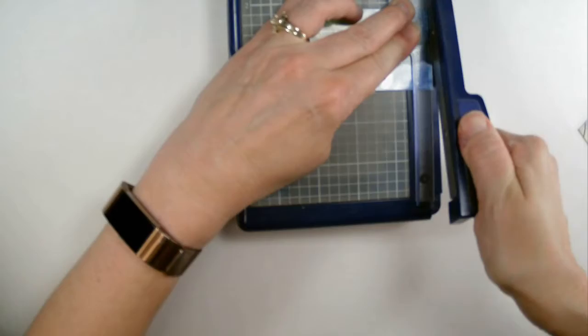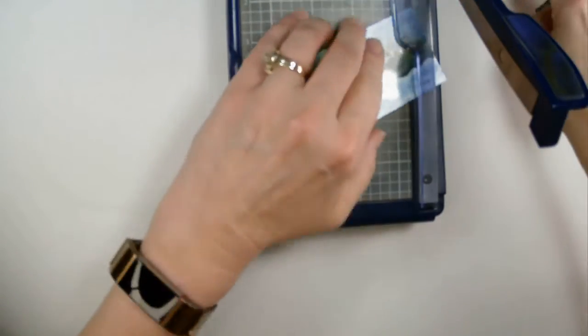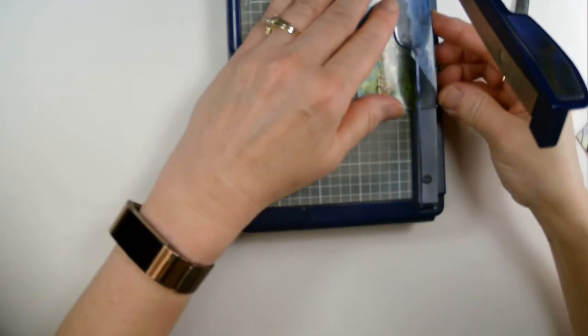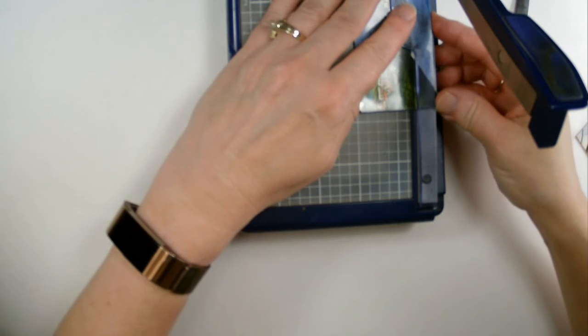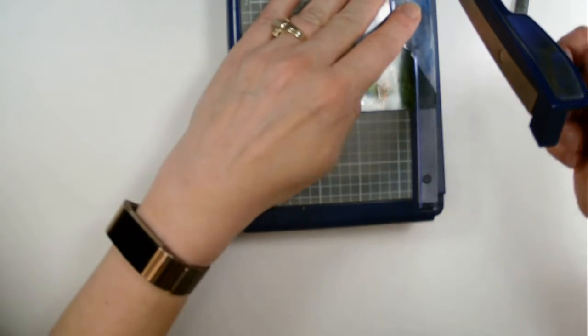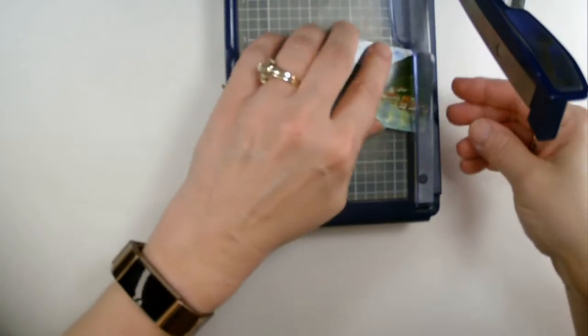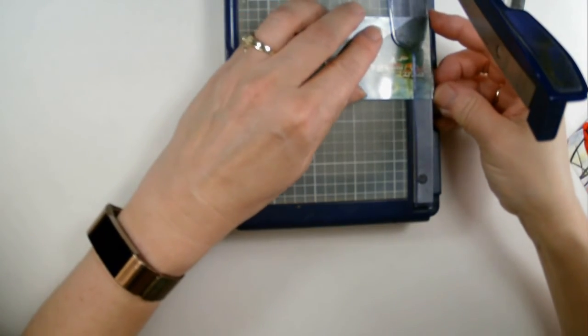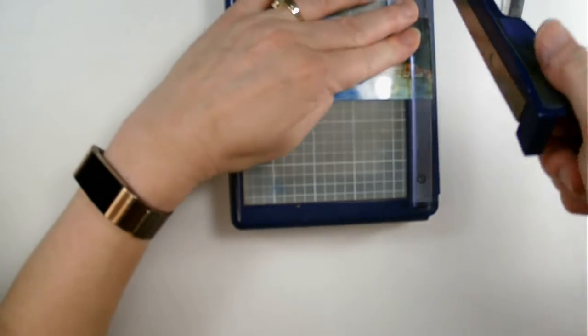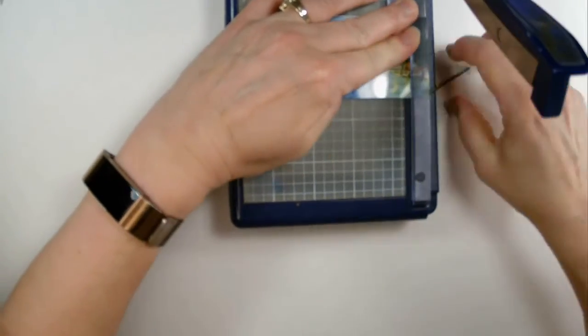I then just trim off the excess magnet or excess photo, or often both. The cutter has grid lines on it, so that makes it so you can line it up to make sure everything is straight with 90-degree angles. If you do it fast, it works better than if you do it slow.